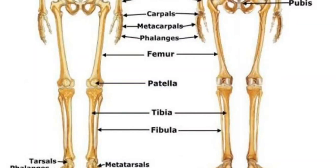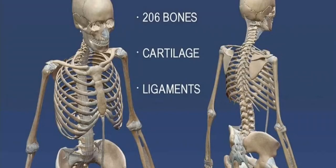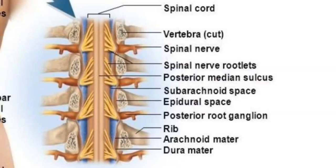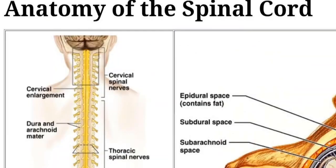The adult human skeleton is made up of 206 bones. The thoracic cage surrounds the heart and lungs. The vertebral column, commonly called the spine, is formed by over 30 small bones. Then there are the limbs and the girdles that attach the four limbs to the vertebral column.